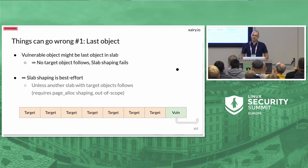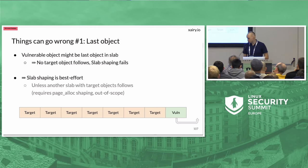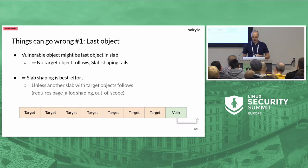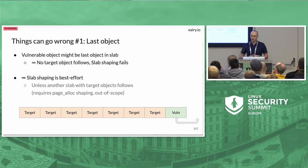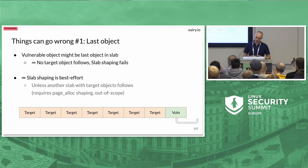There are some things that can go wrong. For example, the vulnerable object might be placed last on the slab, in which case the out-of-bounds access misses all target objects. Slab shaping can never work in 100% of cases for this reason, though this specific problem can be resolved with page allocator-level shaping — shaping page allocator memory so that the slab with the vulnerable object is followed by a slab filled with target objects. But we'll leave that out of scope.